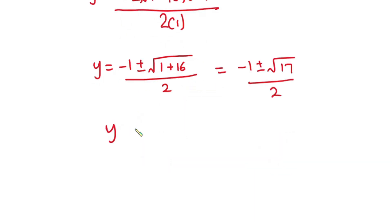So this means that we have y is equal to negative 1 plus square root of 17 over 2, or y is equal to negative 1 minus square root of 17 over 2. But guess what?